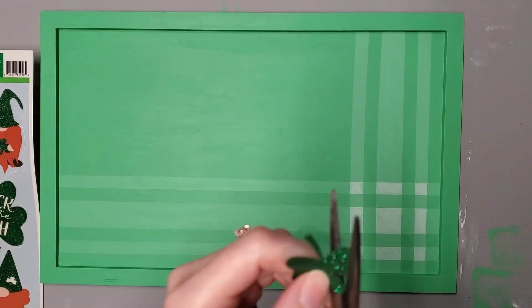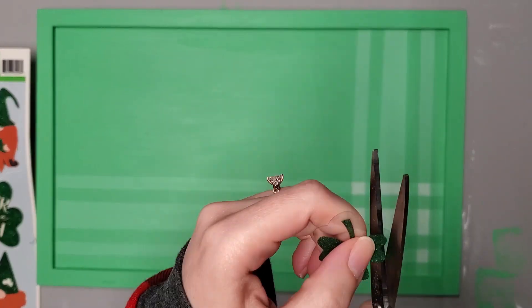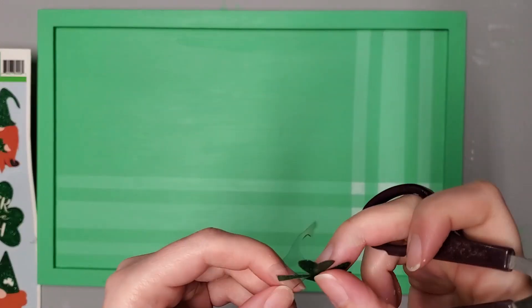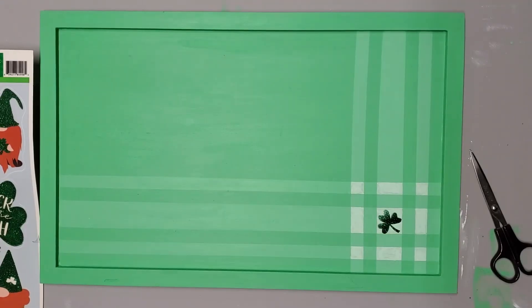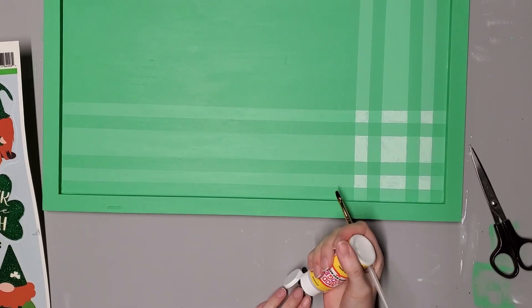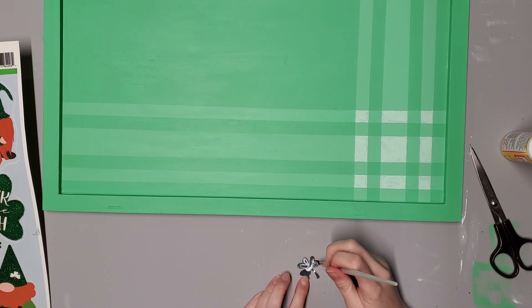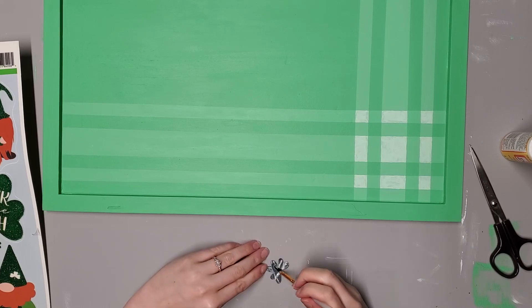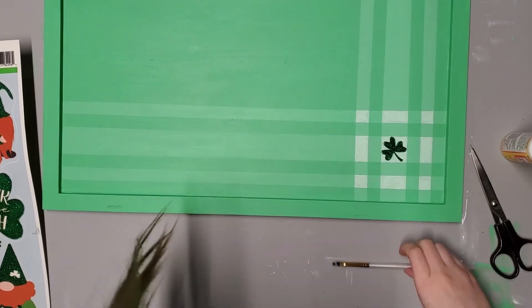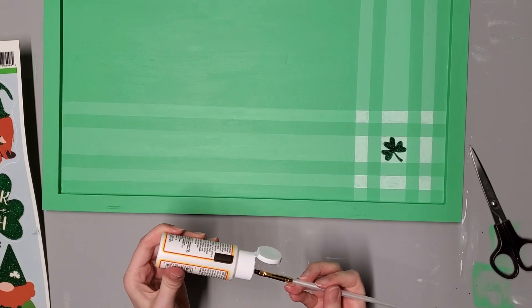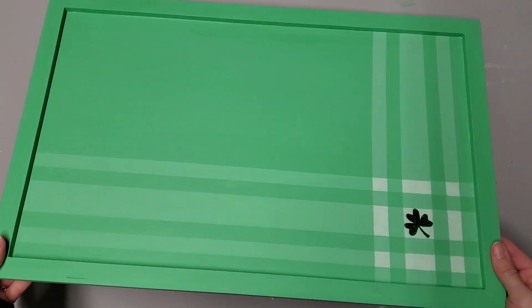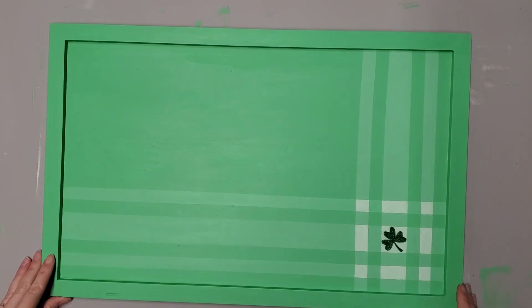I'm using this wall cling set that I got from Dollar Tree with the gnomes and I am cutting out this shamrock because I am not about to freehand a tiny shamrock. I'm using my matte Mod Podge from Dollar Tree and I am just putting some on the back. I stuck that on there, I was able to move it so that it fit perfectly, and then I put more matte Mod Podge right over it.